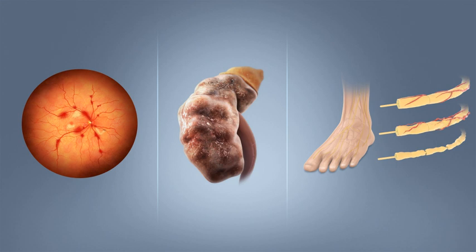The symptoms can include numbness, tingling, pain, and altered pain sensation, which can lead to damage to the skin. Diabetes-related foot problems such as diabetic foot ulcers may occur, and can be difficult to treat, occasionally requiring amputation. Additionally, proximal diabetic neuropathy causes painful muscle atrophy and weakness.